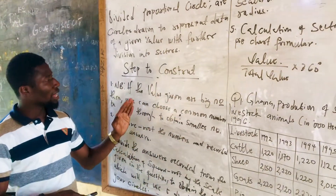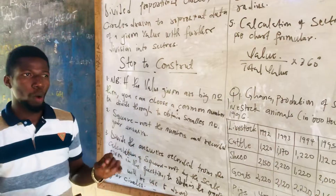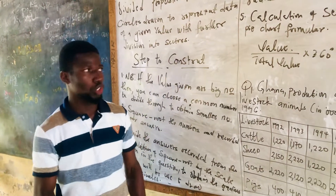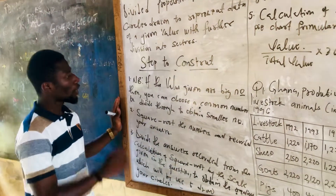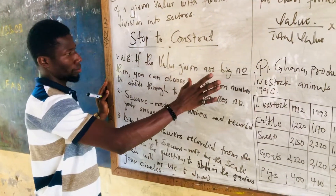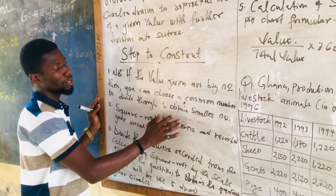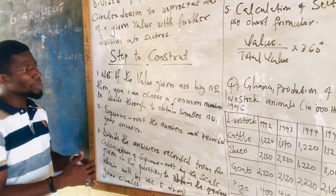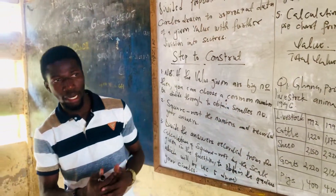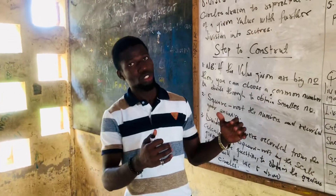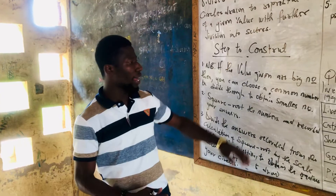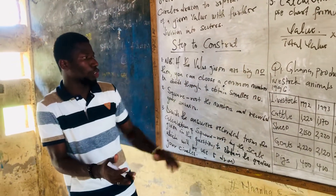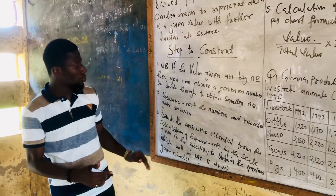In the steps to construct, the first four steps are almost the same as the steps to construct a proportional circle, so don't be confused. Note: if the numbers given are big numbers, then you choose a scale and a common number to divide through to obtain smaller numbers. If the numbers are smaller, there's no need to find a common number to divide.